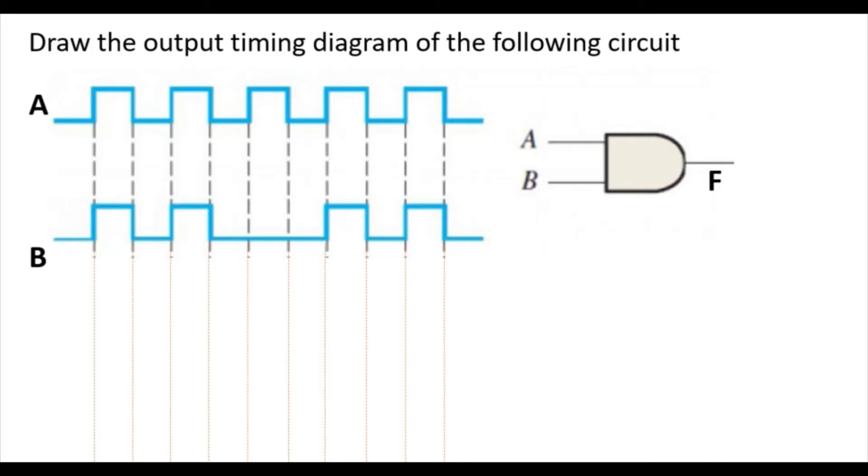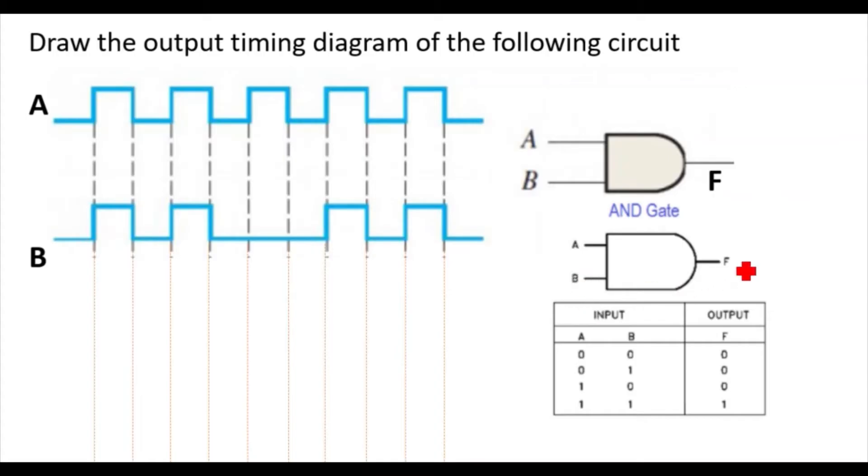So this is the truth table of the AND gate. A and B are the inputs, F is the output. When A and B both are 0, you will get 0 output. When A is 0, B is 1, you will get 0. Here you can see when both inputs are 1, then only you can get this 1 output. And rest of the cases you will get 0 output.